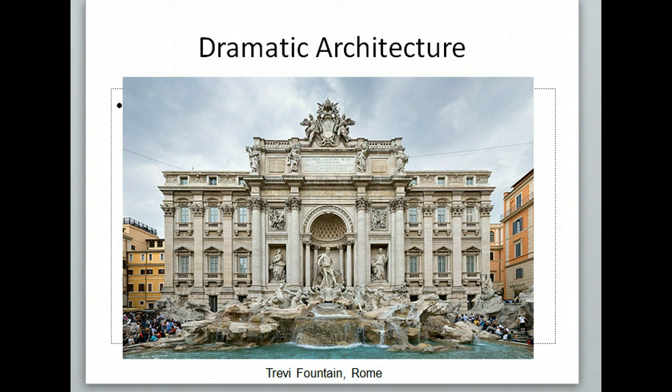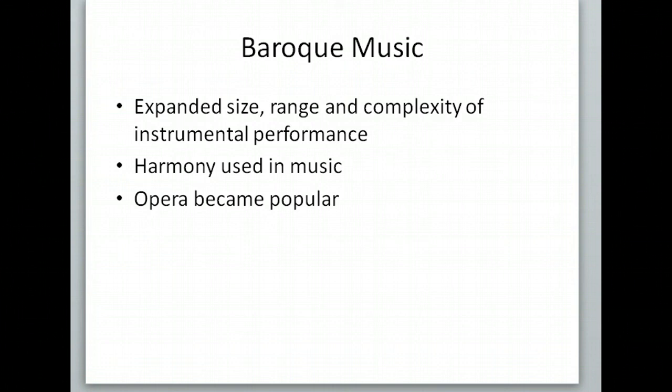Music is also changing from the Renaissance. Baroque music is going to expand the size, range, and complexity of instrumental performance. So instead of just two violins and a cello, you'll have two violins, a viola, cellos, string basses, and wind instruments, and drums. They also start to use harmony, where someone sings a different pitch in the background to provide depth. Opera also becomes popular during this time — this is when Puccini is writing his Italian operas, think Olive Garden style music.